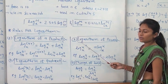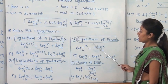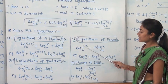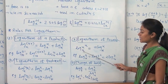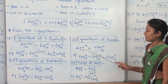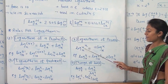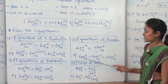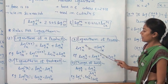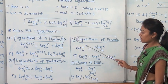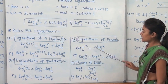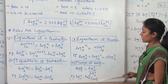The third rule is the logarithm of a power. Log x raised to n base A is equal to n times log x base A. Here n is the power of x. Therefore the power, which appears as an exponent, is brought down and multiplied, giving n log x base A.